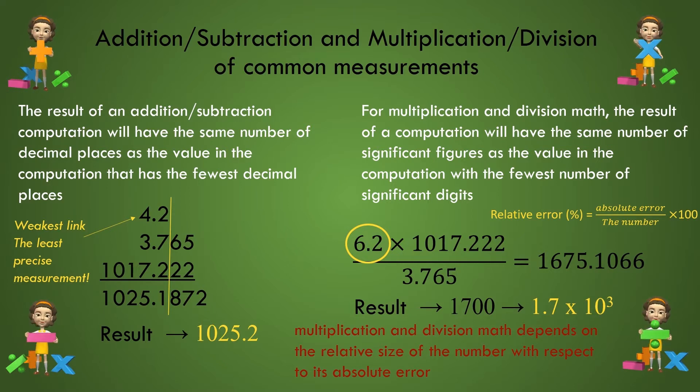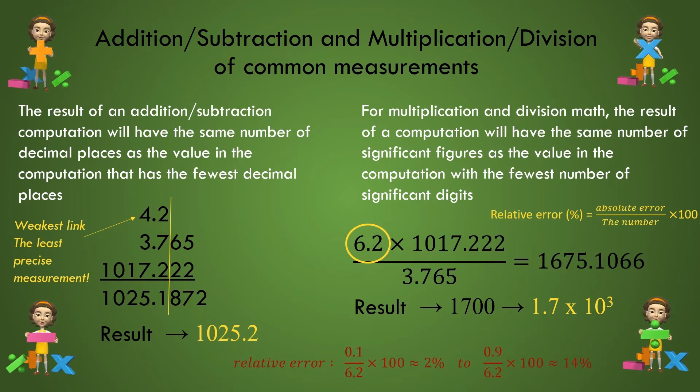So we can estimate the range of the error to be from 0.1 to 0.9. Now, if we take both the high and low value of the error and divide by the 6.2 value, and then multiply by 100 to get it into a percentage, we can estimate the error to lie between 2 to 14 percent probably. In other words, the error in the measurement is a rather large percentage of the number itself and could be as high as 14 percent.